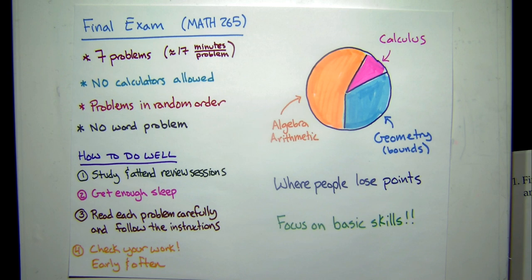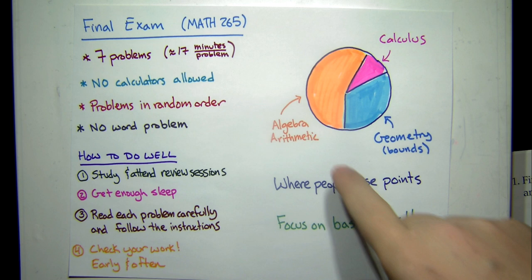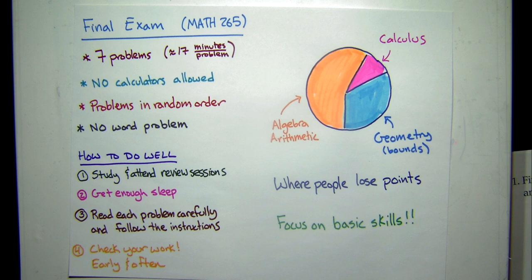Where do people tend to lose points? I've been doing this for quite a long time and have graded a lot of tests. On Calc 3, there are three big areas where people lose points: calculus, geometry, and algebra/arithmetic. And of the three, it's that algebra and arithmetic that kills you every time. You're not going to succeed if you aren't careful.